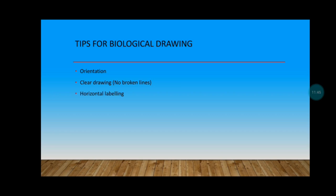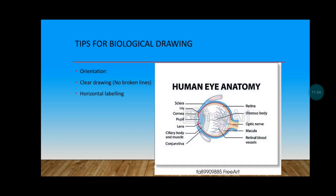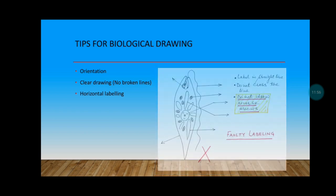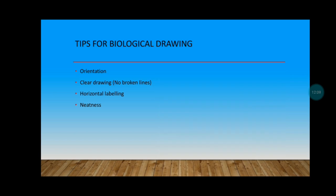So horizontal labeling. This is how horizontal labeling looks like. The labels of your diagram shouldn't be crossing each other. It doesn't make your work excellent. So neatness during a biological drawing or even when you are drawing a graph, neatness is very, very important.